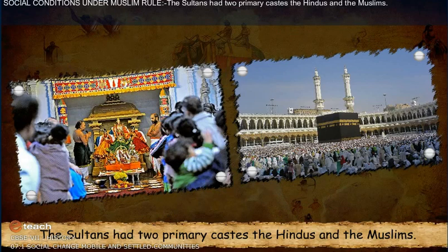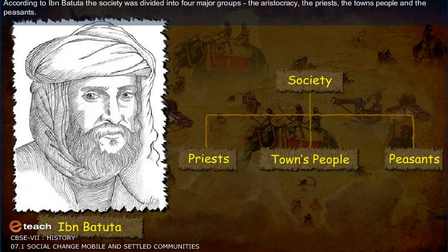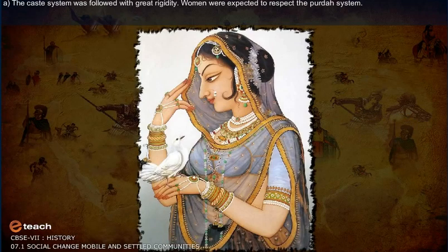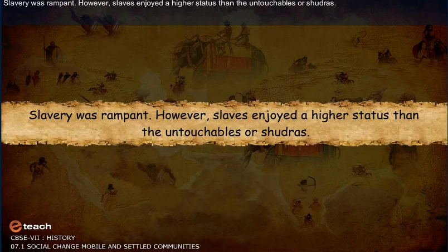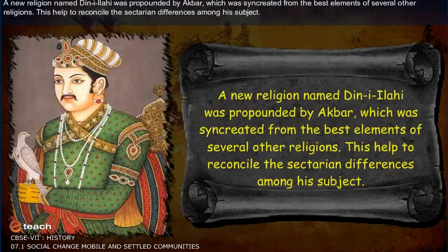Under Muslim rule, the sultans had two primary castes: the Hindus and the Muslims. According to Ibn Battuta, the society was divided into four major groups: the aristocracy, the priests, the townspeople, and the peasants. The caste system was followed with great rigidity. Women were expected to respect the parda system, and slavery was rampant; however, slaves enjoyed a higher status than the untouchables or Shudras.